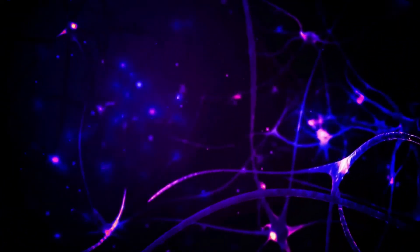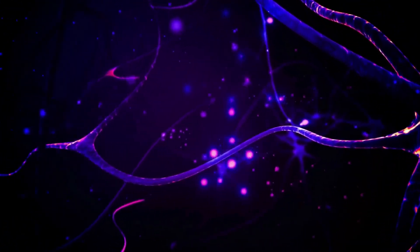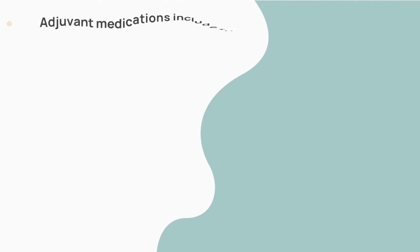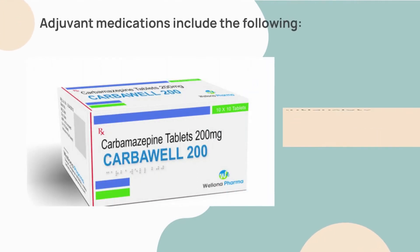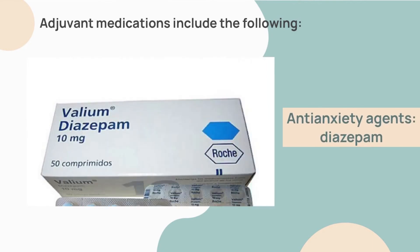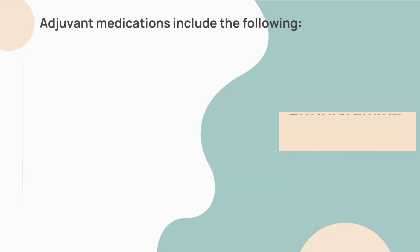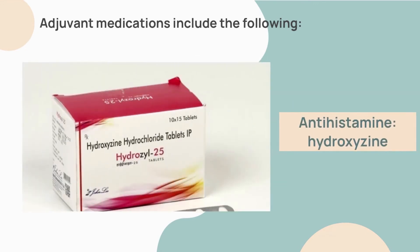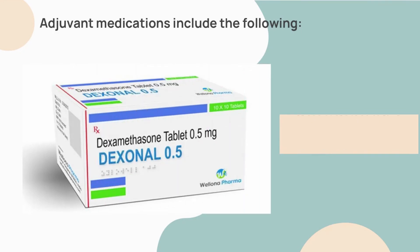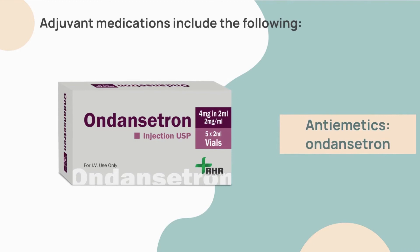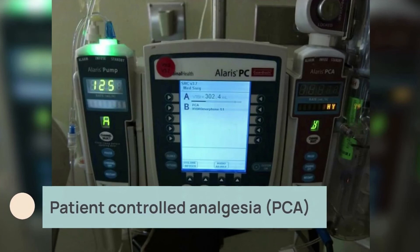Adjuvant analgesics, or coanalgesics, enhance the effects of non-opioids, help alleviate manifestations that aggravate pain, and are useful for treating neuropathic pain. Adjuvant medications include anticonvulsants such as carbamazepine, anti-anxiety agents such as diazepam, tricyclic antidepressants such as amitriptyline, antihistamines such as hydroxyzine, glucocorticoids such as dexamethasone, antiemetics such as ondansetron, and anesthetics such as ketamine.